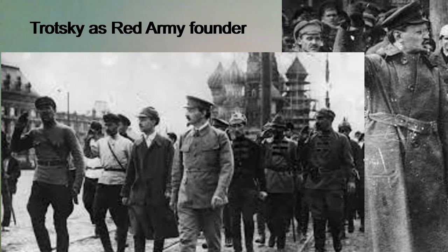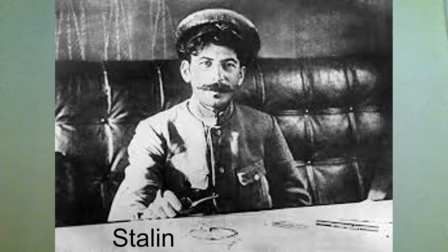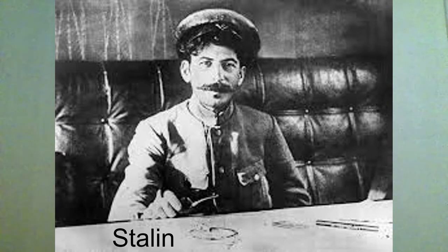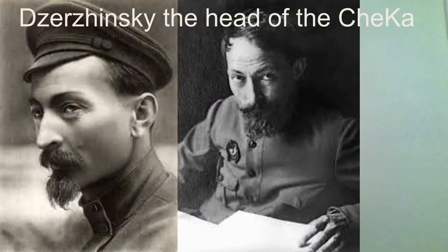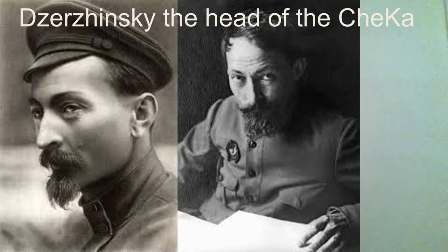Stalin, by contrast, is a bureaucrat. He doesn't know how to speak, speaks Russian with an accent, and is not very popular — he doesn't have much standing in the party. Trotsky's mistake is that he looks down at Stalin as a petty bureaucrat. But Stalin is very clever and very manipulative, and he will show what he can do with his bureaucratic approach. The third person in line is Dzerzhinsky, head of the Cheka — he has a huge army of secret services behind him — but Dzerzhinsky will be out very shortly.